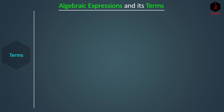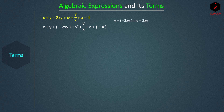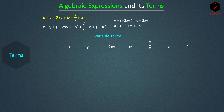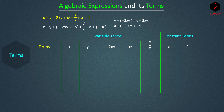So, what are the terms of an algebraic expression? This expression can also be written as X + Y + (−2XY) + X² + Y/X + A + (−4), because Y + (−2XY) = Y − 2XY and A + (−4) = A − 4. So the expression is formed by adding the elements X, Y, −2XY, X², Y/X, A, and −4. The first five are variable terms; A and −4 are constant terms. Note that the value of A is not known. These elements are called the terms of this algebraic expression.